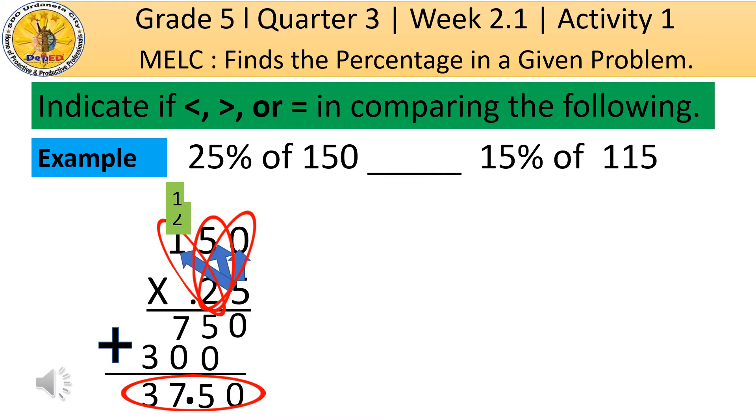Then, let us multiply also 15% of 115 so that we can compare both the product in order to indicate what correct symbol will be written later. So, let us write in vertical position. 115 times 15%. 15% will be changed to decimal numbers, which is 15 hundreds, before we multiply.